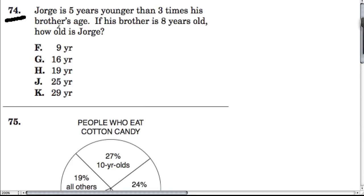Here's a typical algebra problem. We have that this brother, Jorge, is 5 years younger than 3 times his brother's age.